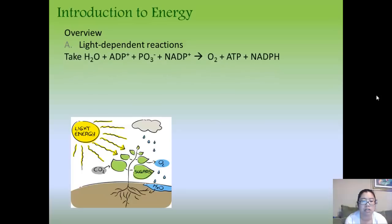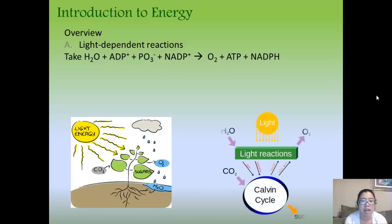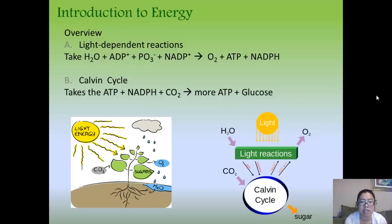In the Calvin cycle, they take the byproducts of the light-dependent reactions, ATP and NADPH, and CO2, and then will produce more ATP and glucose. So, we're wondering, where did the oxygen go? Well, between the light reactions and Calvin cycle, oxygen is released. The final component is that you have more ATP and glucose.